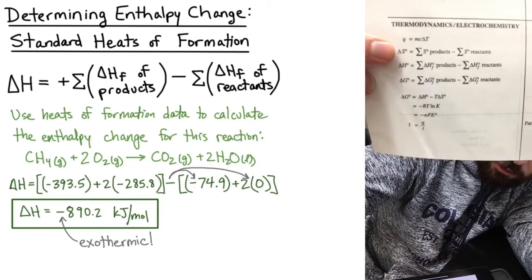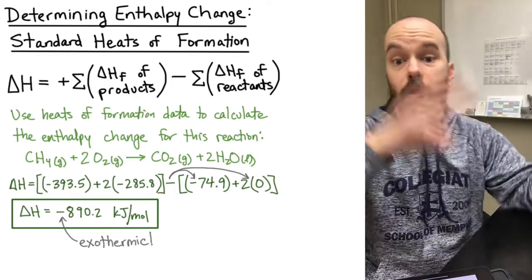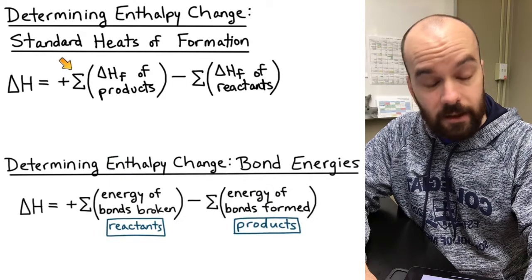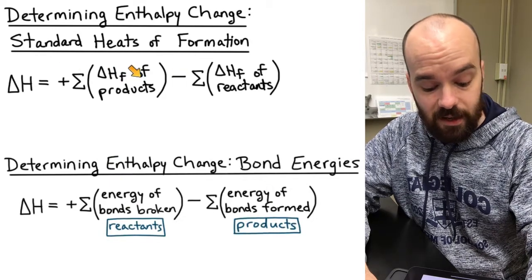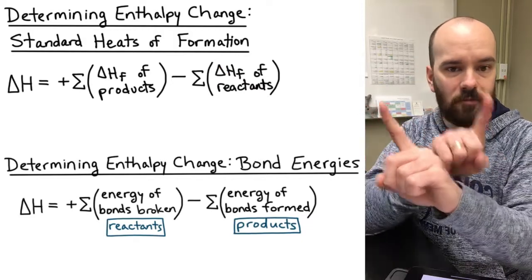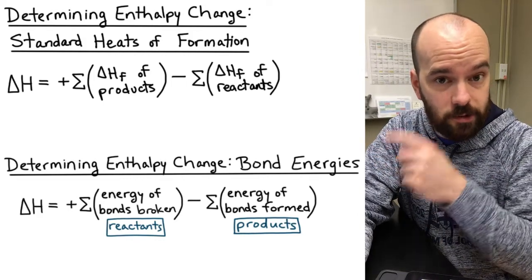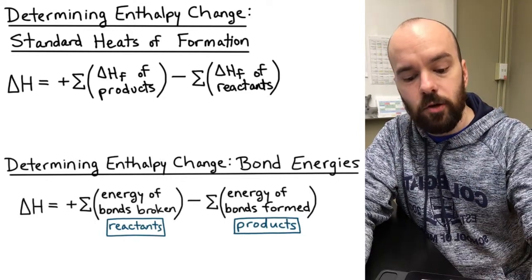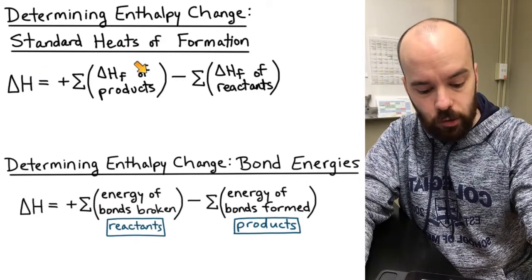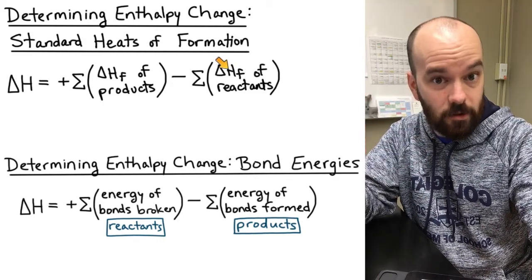This ΔH equation is found on the AP Chemistry equations and constants sheet in the thermochemistry section. This method also extends directly to standard entropies and standard Gibbs free energies later in the thermodynamics unit. One important caution: don't confuse this formula with the one for bond energies. For bond energies the formula is reactants minus products — the opposite order — because it's the bonds broken in the reactants minus the bonds formed in the products.